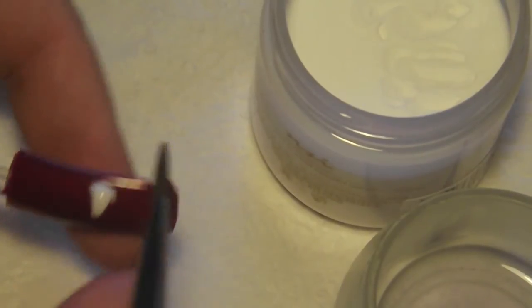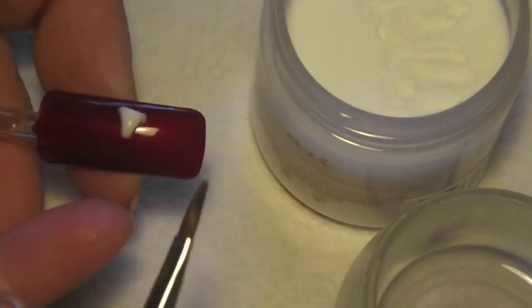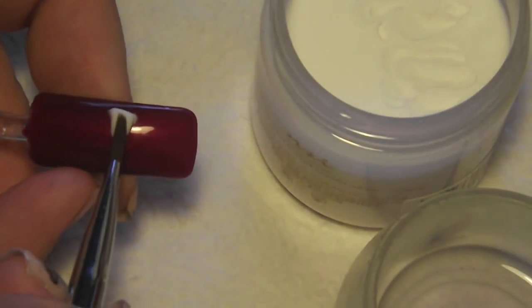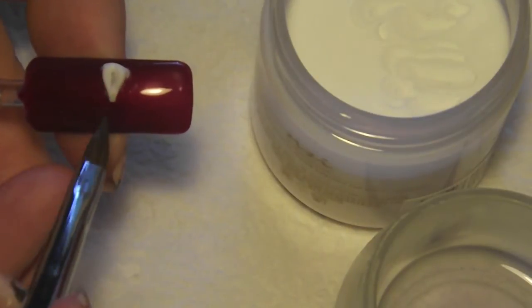Once you have that shape, and you push in your top a little bit, you're just going to take the tip of your brush, and you're just going to press right down in the center. And then you're just going to gather your ball back up.